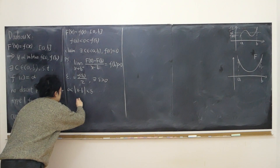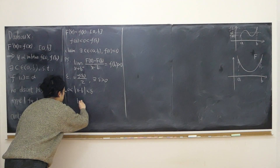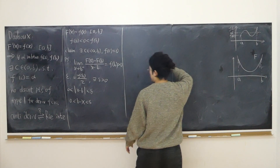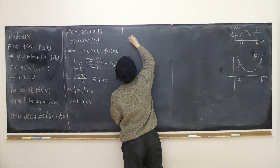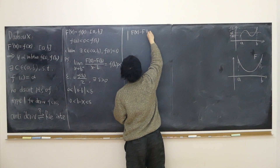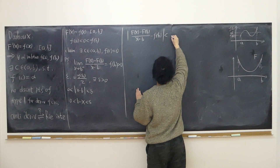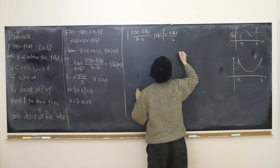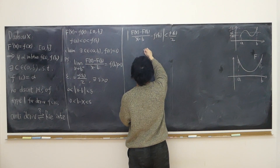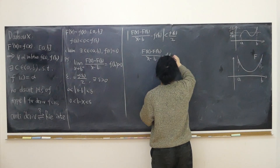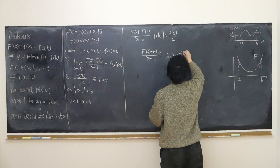Because x is approaching from the left-hand side, the absolute value of [F(x) − F(b)] / (x − b) − f(b) is less than epsilon, which is half of f(b). To get rid of the absolute value: [F(x) − F(b)] / (x − b) − f(b) is less than half of f(b) and greater than negative half of f(b).